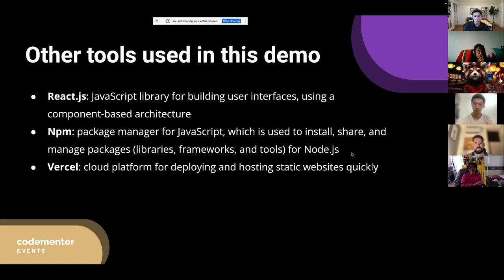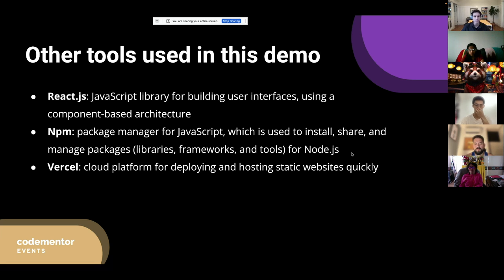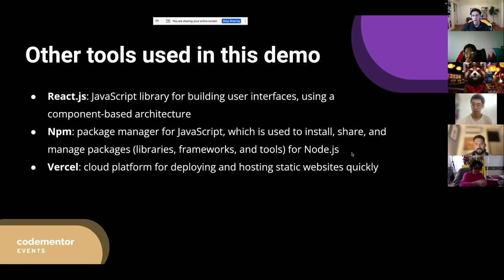We're also going to be using NPM (Node Package Manager) to install different packages — basically snippets of other people's code that we can reuse. We're going to use Create React App, which is a way to scaffold a boilerplate React app with useful scripts so we can get started quickly. And we're going to deploy using Vercel — a cloud platform tool that makes it really simple to deploy a static website to the internet with essentially one command, and it plays nicely with Create React App.